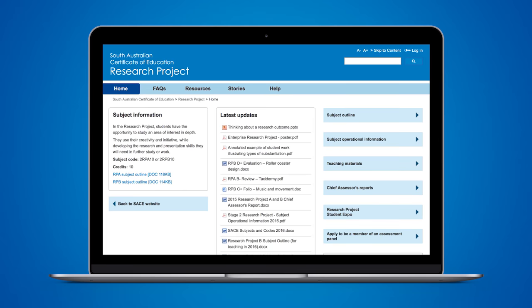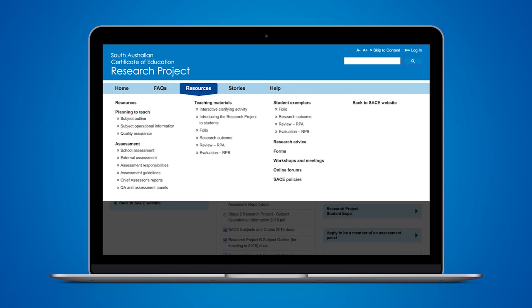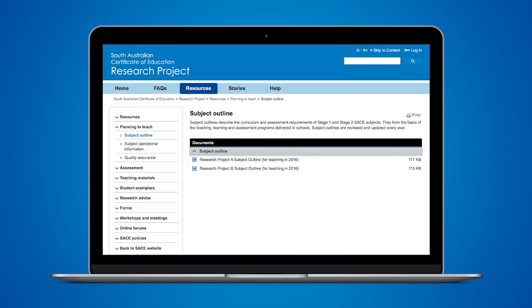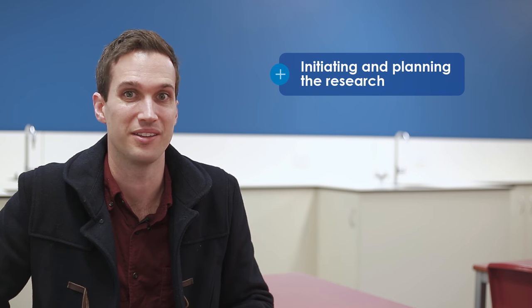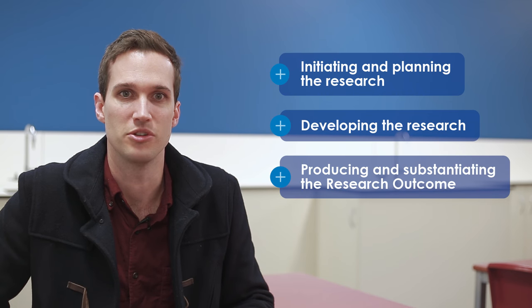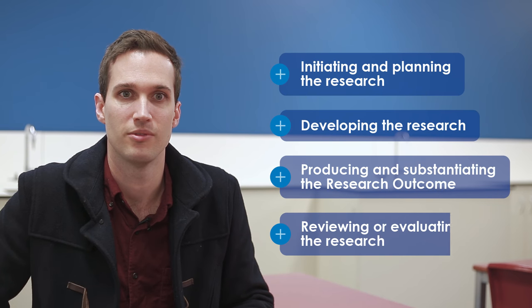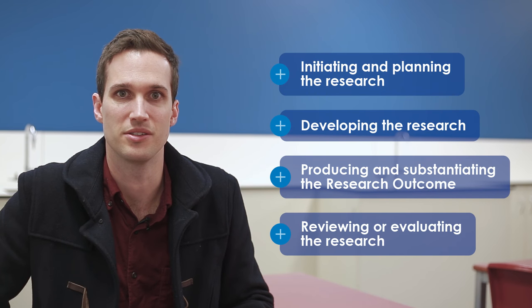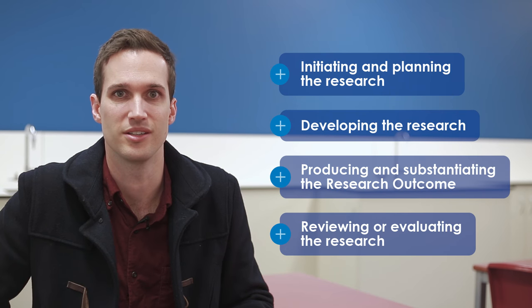Everyone needs to know about the subject outline. There are a few things you need to be familiar with. The research framework is particularly important. There are four parts to the framework: initiating and planning the research, developing the research, producing and substantiating the research outcome, and reviewing or evaluating the research. This is how the subject is structured.